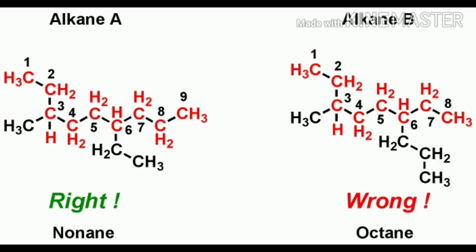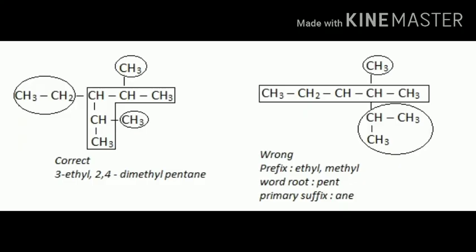Now, for alkane A and alkane B — what is the correct name? We must choose the longest straight chain. Here there are 9 carbon atoms present, so it is nonane. In the wrong answer it is called octane, so we must always choose the longest straight chain. For correct versus wrong numbering: the correct numbering gives 3-ethyl-2,4-dimethylpentane.